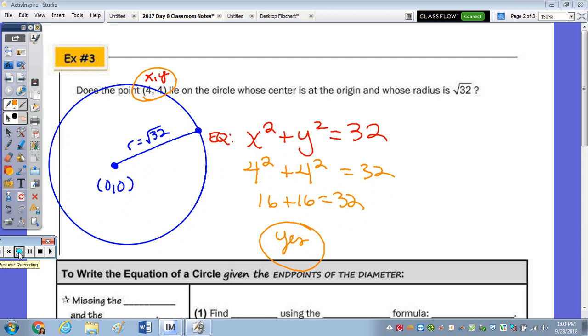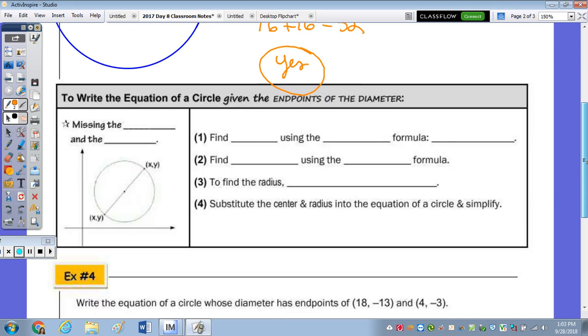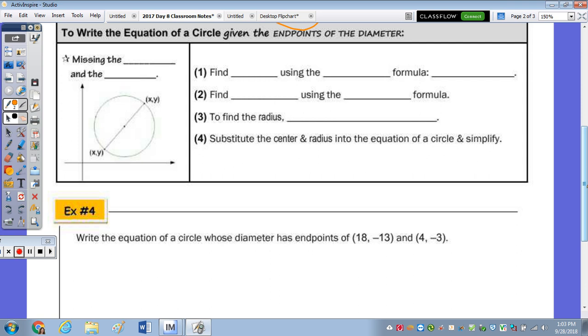In the next section here, it says to write the equation of a circle given the endpoints of the diameter. So are we given the center here? No. Are we given the radius? No. Can you find, so if I scroll it up, so we're missing both the center and the radius. How can you find the center of the circle? So if we know the endpoints of a diameter, because the diameter always passes through the center. How will we calculate or find the center? The jumps? Yeah, I saw that some of you do the jumps, but what formula? Midpoint.